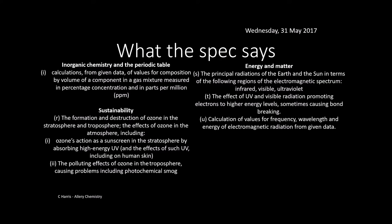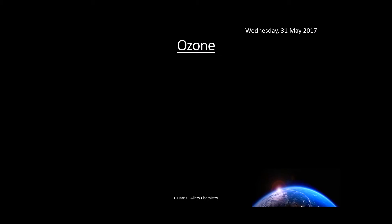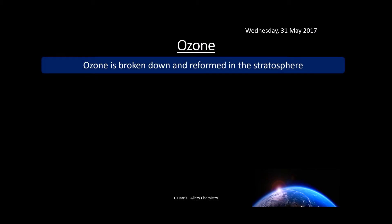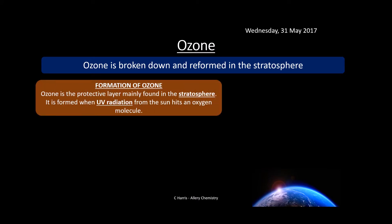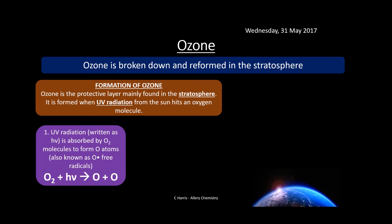This is specifically related to the specification points taken from the syllabus for the ozone story. So let's look at ozone. Ozone is broken down and reformed in the stratosphere. The formation of ozone — ozone is a protective layer found in the stratosphere, that's the upper part of the atmosphere. It's formed when UV radiation from the sun hits an oxygen molecule. Instead of just talking about destroying ozone, we're looking at how it's made so it can be remade after it's been destroyed.